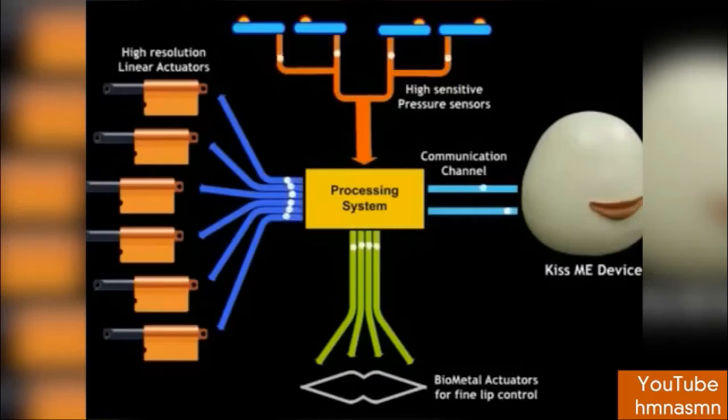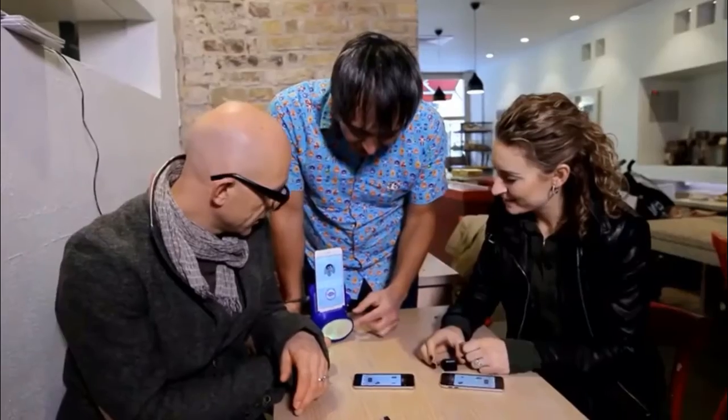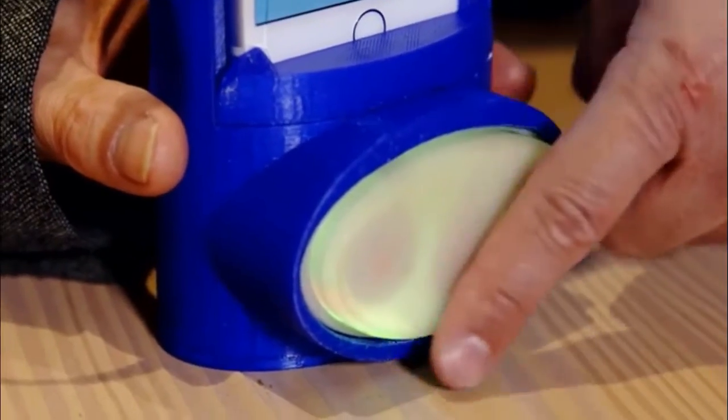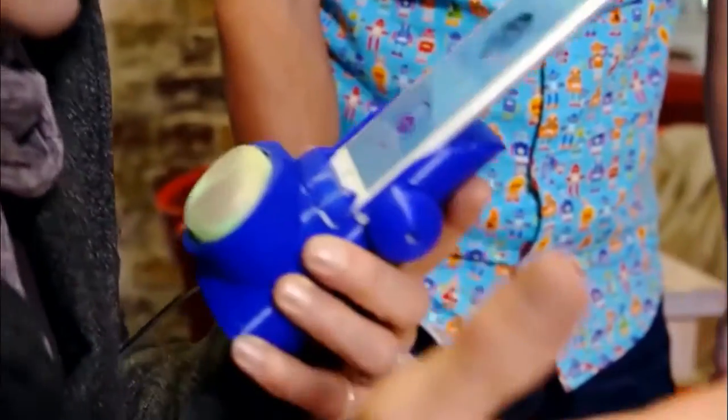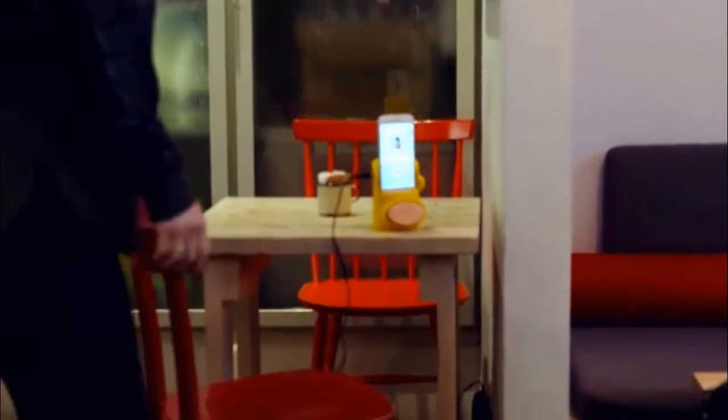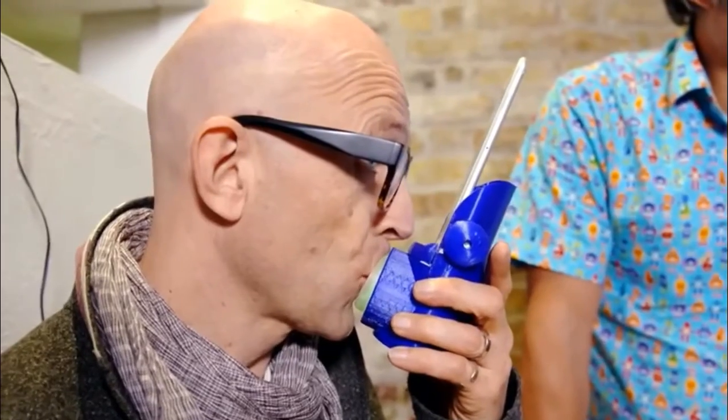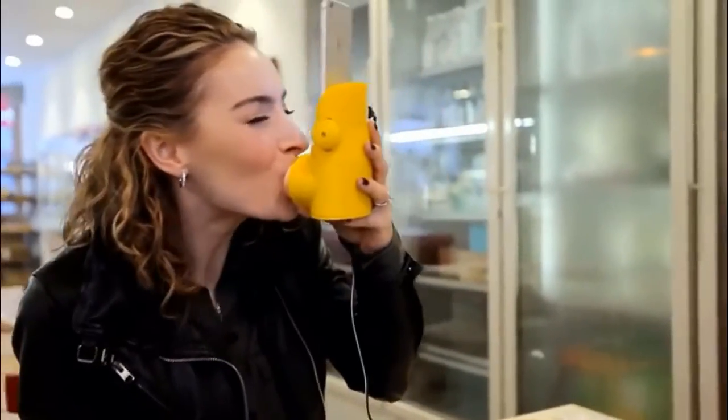Kissing someone over the internet is now possible with this iPhone accessory called the Kissenger. As you can see on your screen, this is the actual gadget — the Kissenger. It is an iPhone accessory that adds a robotic pad. As you can see below, this is a kissing pad for your phone. When you kiss on this pad, it senses the pressure. High precision force sensors are embedded under the silicon lips to measure the dynamic force at different parts of your lips during a kiss. The device sends this kiss sensation data to your phone, which transmits it to your partner over the internet in real time.